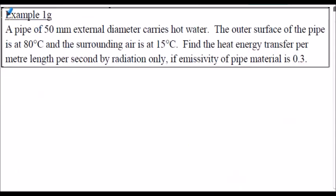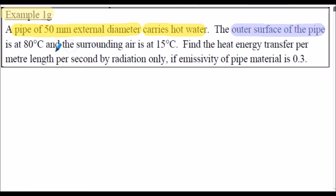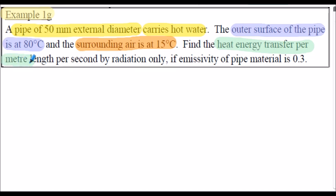Here's example 1G, extracted from the workbook. A pipe of 50 millimetres external diameter carries hot water. The outer surface of the pipe is at 80 degrees C, and the surrounding air is at 15 degrees C. We've got to calculate the heat energy transfer per metre length of the pipe per second by radiation only. The emissivity value of the pipe material is given as 0.3.